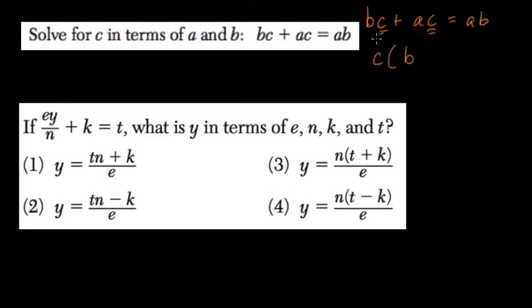So C times B is BC plus C times A is AC, right? That equals AB. So here C times some number B plus A is AB.